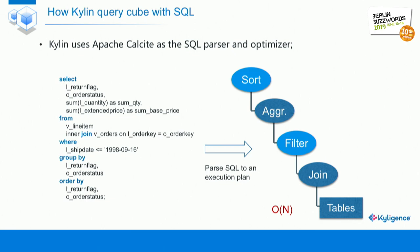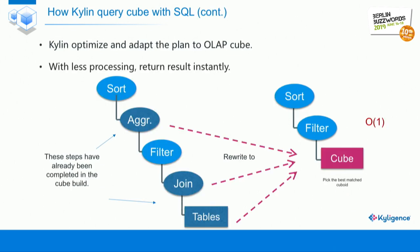Looking at this plan, the table join and aggregation are usually the most time-consuming parts. If you execute this plan directly, the time complexity is at least O(N). How does Kylin handle this? Kylin pre-calculates and pre-aggregates the data into cubes, meaning the table join and aggregation are already finished in the cube building phase. For this plan, Kylin rewrites it to start from the cube, does some filtering, and returns results. Since the cube is already aggregated and indexed, the cube lookup is nearly constant time complexity — almost O(1).